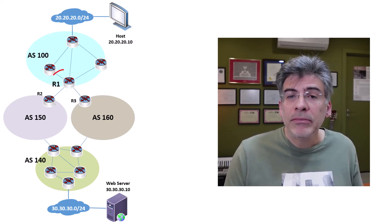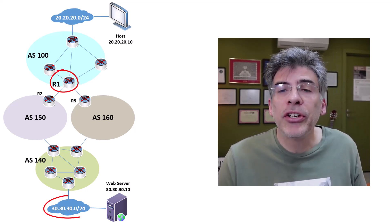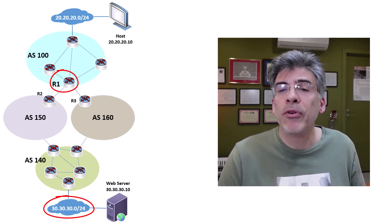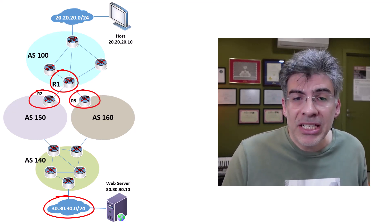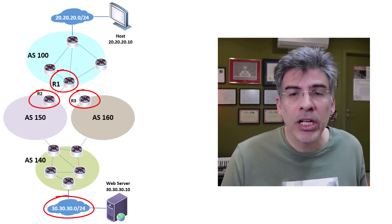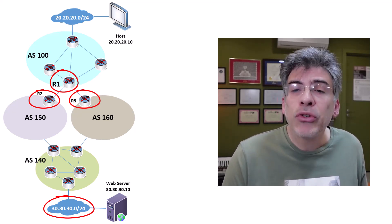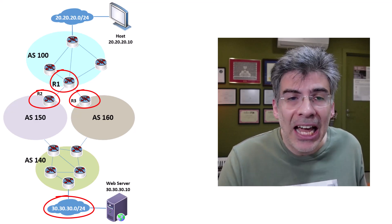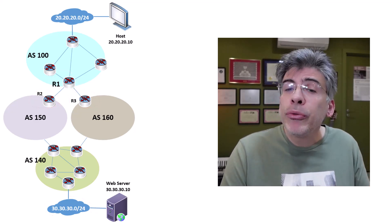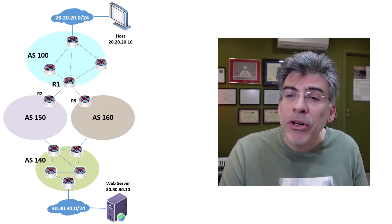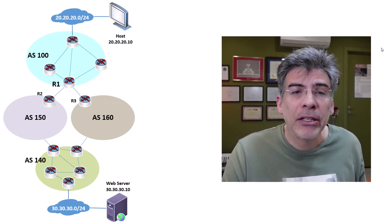Here we have R1, and R1 learns about the 30.30.30.0/24 network from both R2 and R3. Now this network is an external network to our AS, therefore the oldest entry does indeed break the tie if all previous attributes are equal.